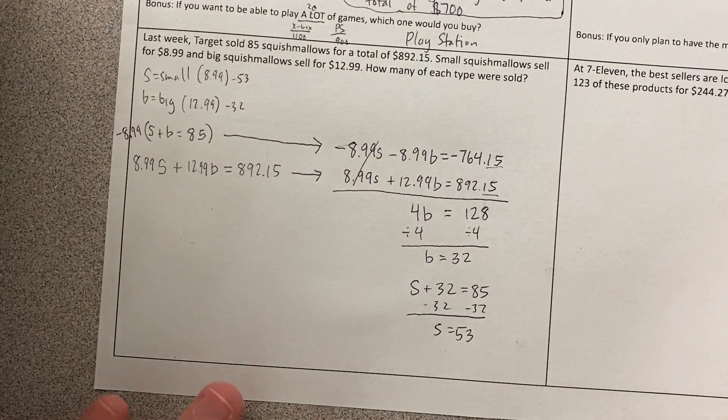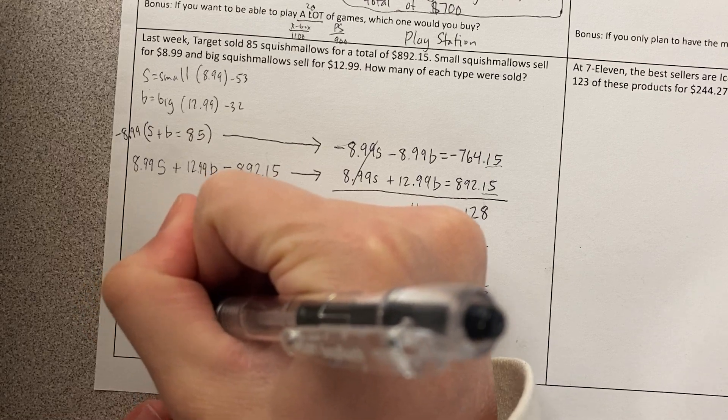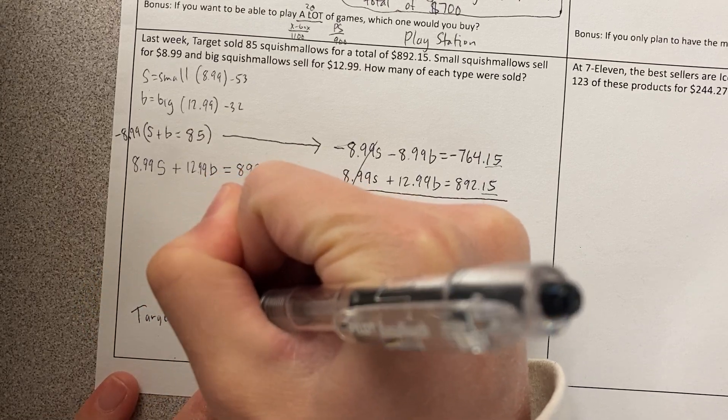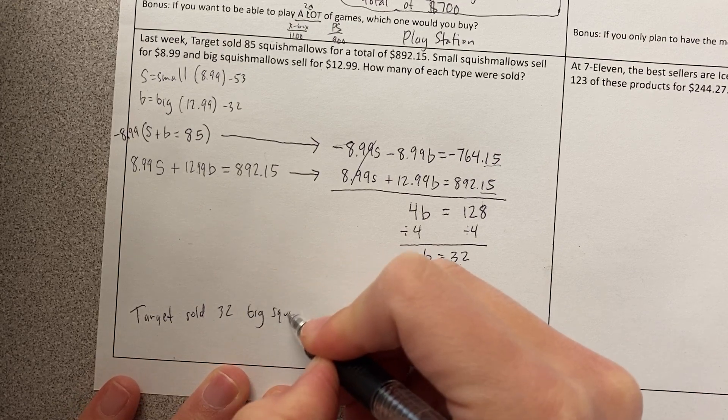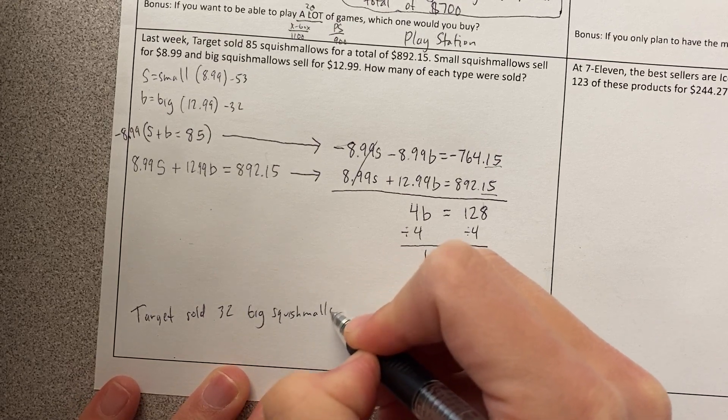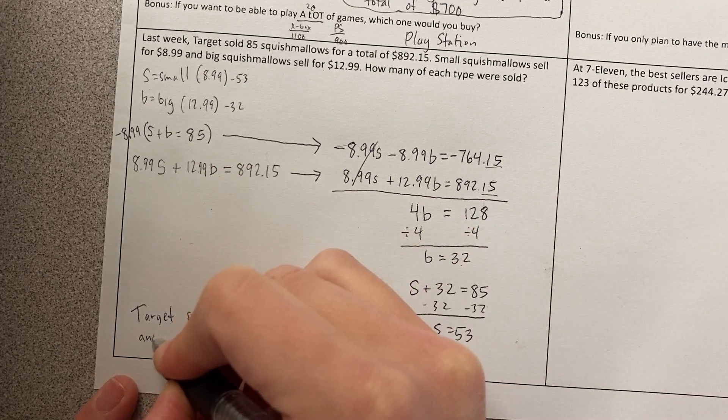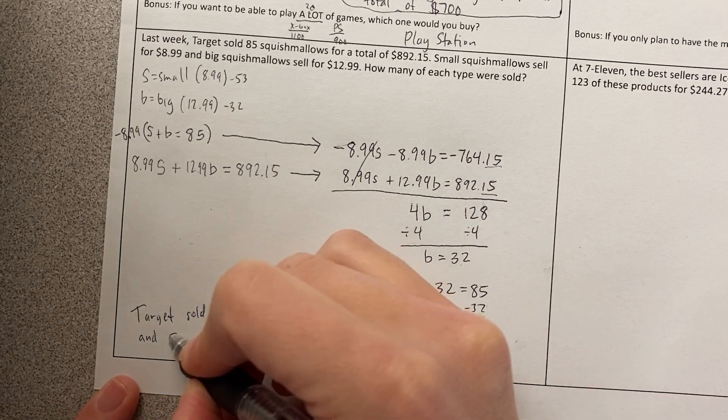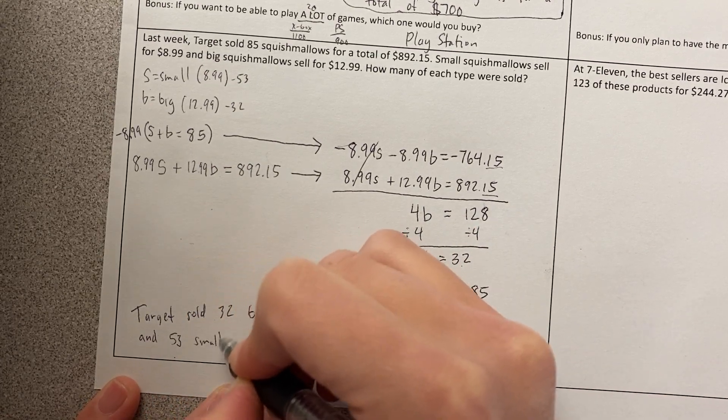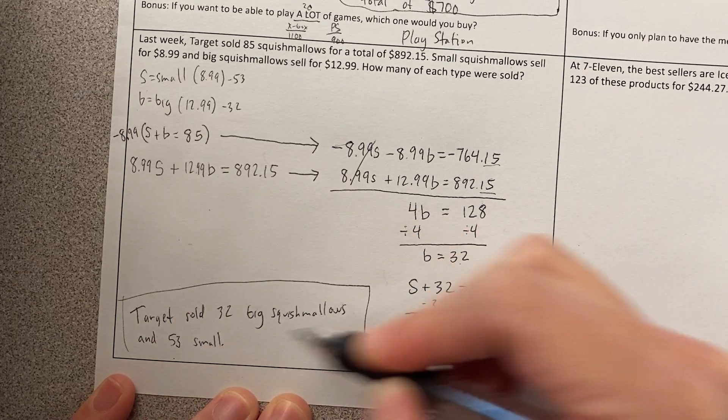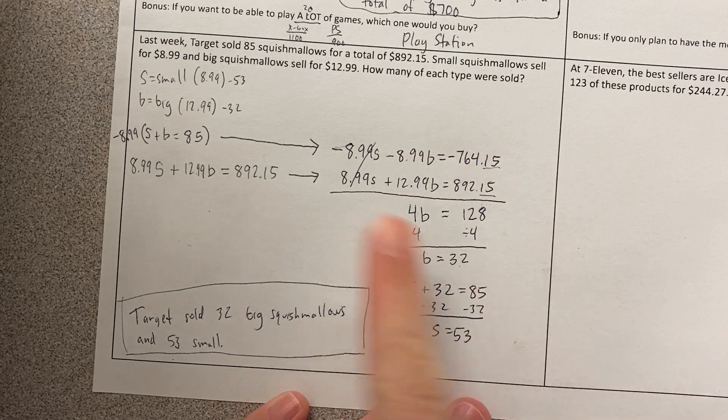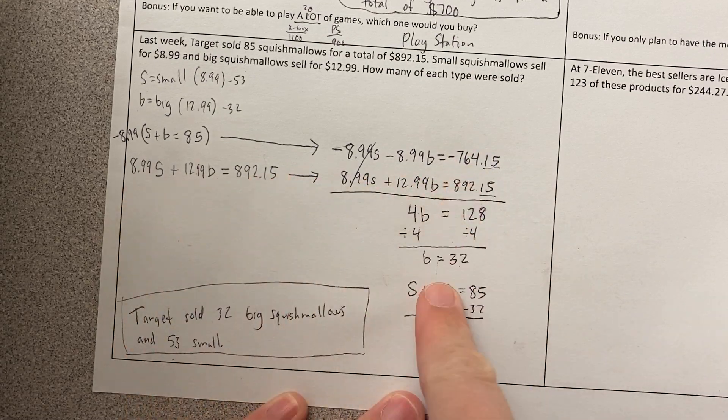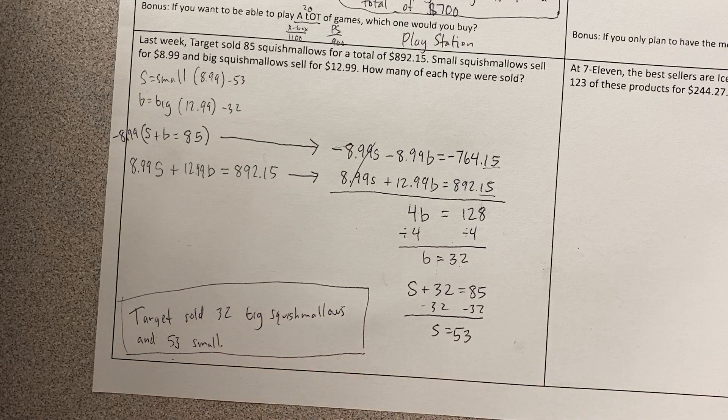So my answer is correct. So I'm going to write Target sold 32 big Squishmallows and 53 small. There it is. Okay. Notice it was really similar to my first example. The only difference is that there's these big long numbers and you're just going to be careful and use your calculator and not worry about it.